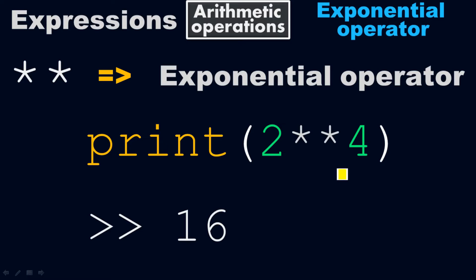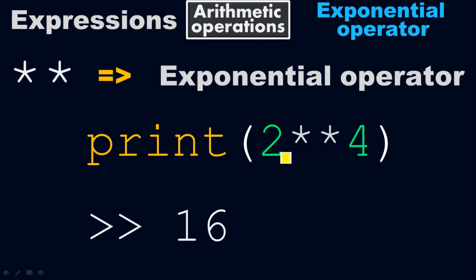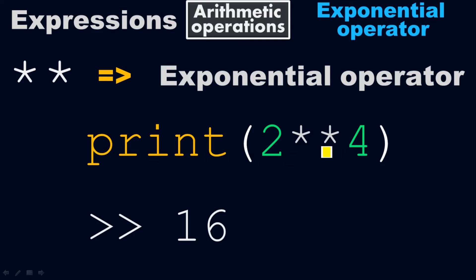In native mathematical notation, we can write this as two to the four. But in Python, you cannot write two to the four — you must use double asterisks for the exponentiation. Double asterisks means two to the four. This double asterisk is the sign for exponentiation and is called the exponential operator. So this is the expression with the exponential operator.